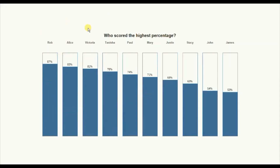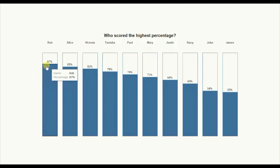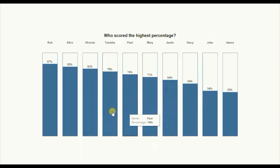Here I have a progress bar chart that shows the percentage scored by 10 students of a class on a scale of 0 to 100%. So Rob, who has scored 87% in the class, has a bar that is filled up to 87% out of the total 100%. By the end of this tutorial you will be able to create a progress bar chart similar to this one.